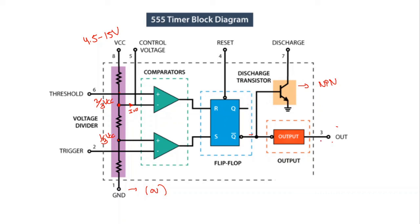Whenever the output at pin 3 is low, Q-bar is 1. The base of the discharge transistor is at high voltage, so it acts as a closed switch and helps discharge the capacitor. Finally, the output driver circuit is used to drive TTL loads and can source or sink up to 200 milliamperes of current. It is basically an inverting circuit.